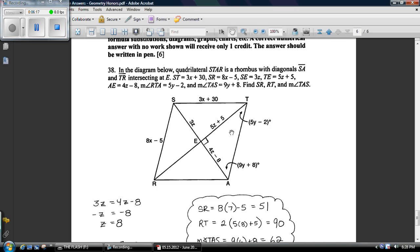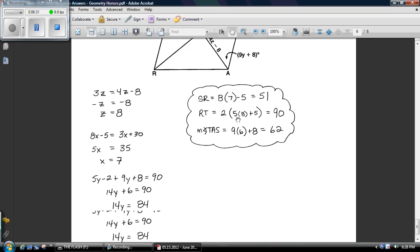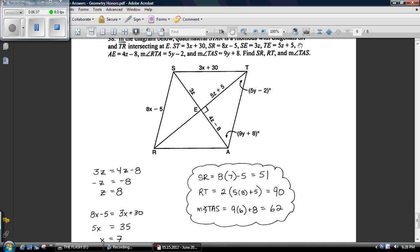You see this little triangle here? Rhombuses' diagonals are perpendicular to each other, which means that's a right angle. Which means these two angles right here in this triangle have to add up to be 90 degrees. So, I set them equal to 90. I solve it. I get y equals six.